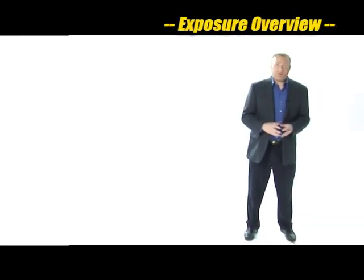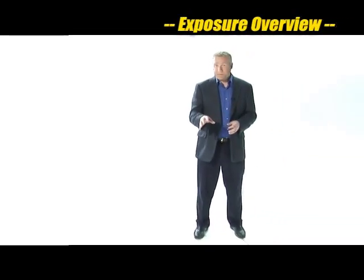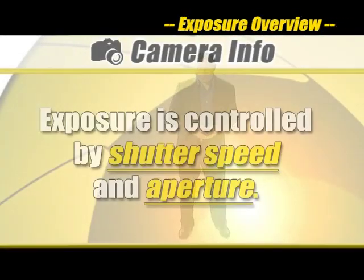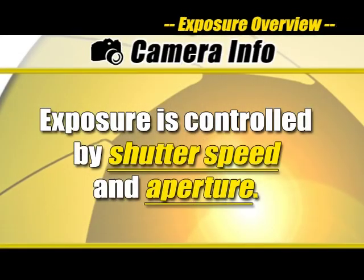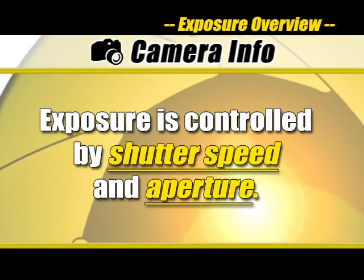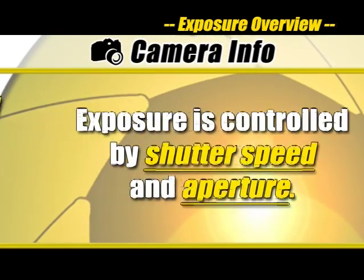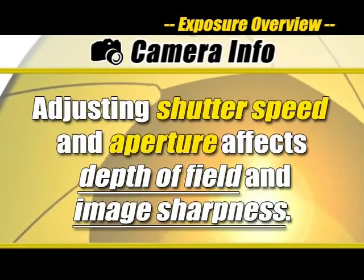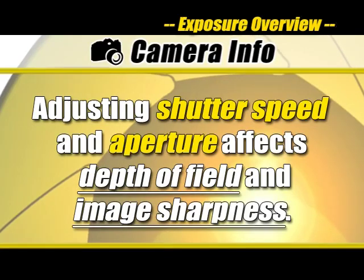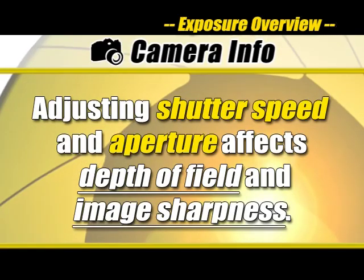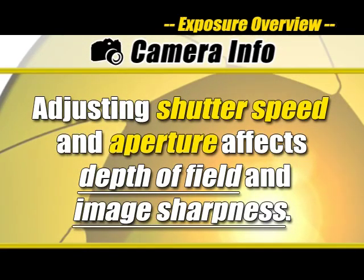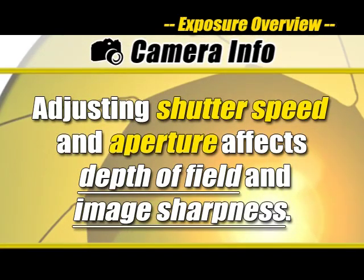Clearly, proper exposure is a major part of taking good pictures, and by changing the aperture and shutter speed, either with the automatic or manual settings, you can change the depth of field or the motion blur or sharpness while still keeping the exposure you want.